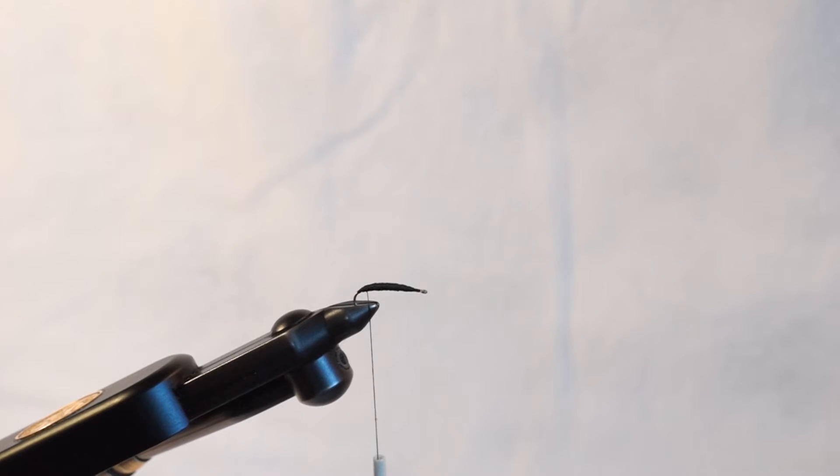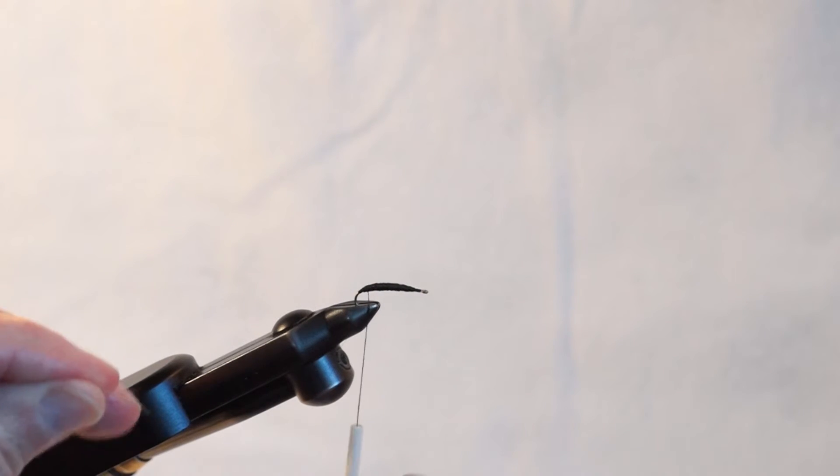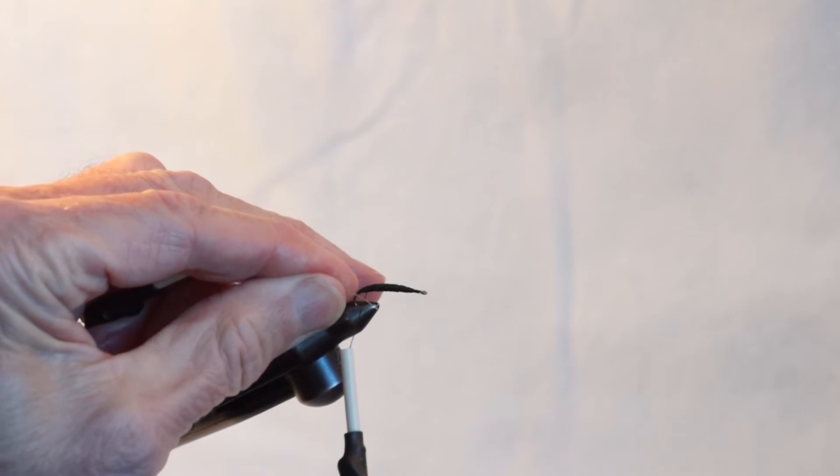For thread body flies, the situation varies according to the size of the hook, of course. If you have a relatively big hook, not tiny, a very small thread takes a long time to cover, so it's an advantage to use a little thicker thread.